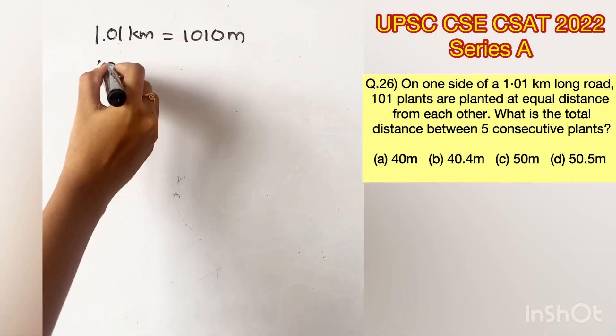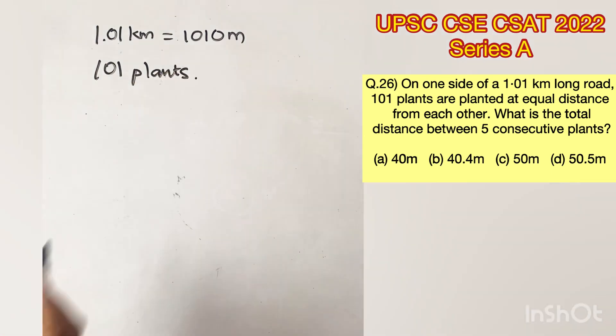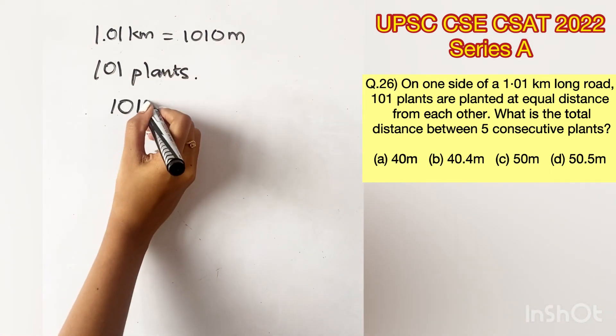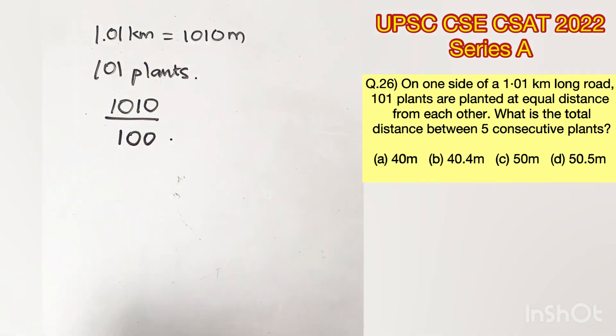Now they are saying 101 plants are planted at equal distance. Now I will divide 1010 by 100 and not 101. I will explain why.